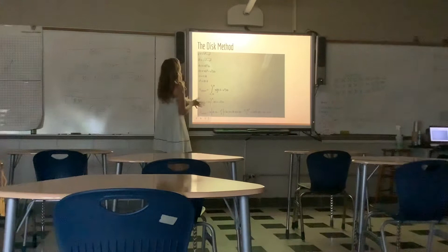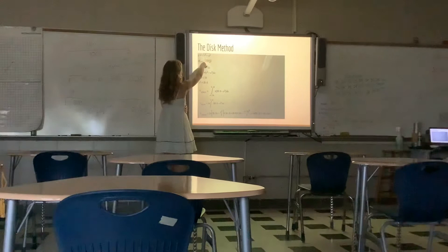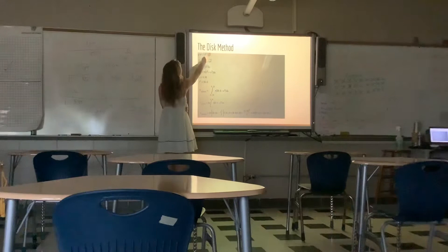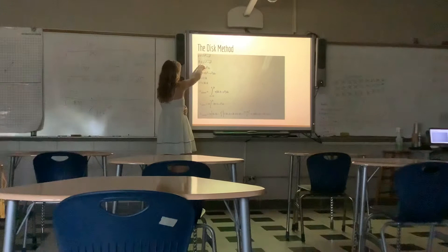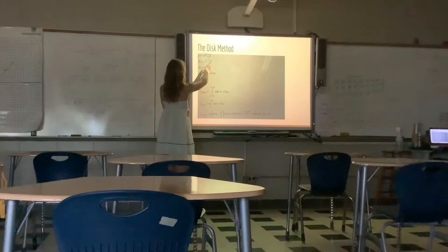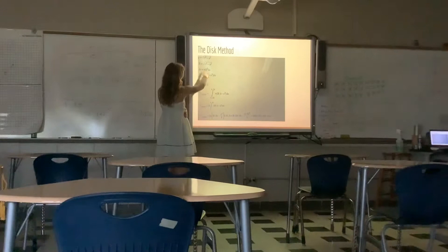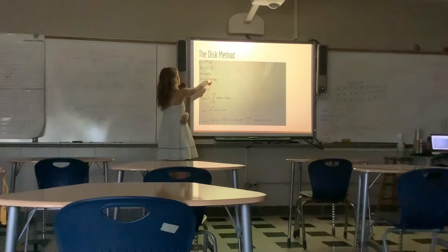This is the equation for a circle. You take the square root of it to solve for y, and then this is going to be your r value, which is basically your radius squared. Then your volume is going to be pi r squared because that's the equation for a circle, and you just take the integral of that.